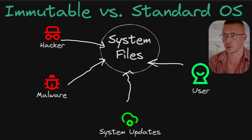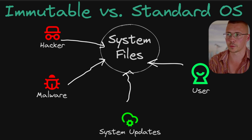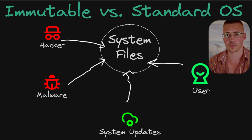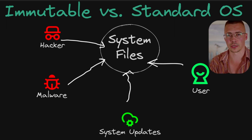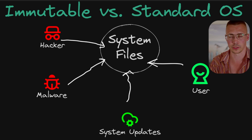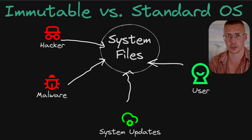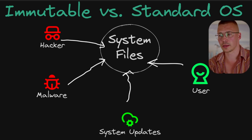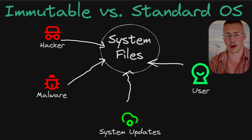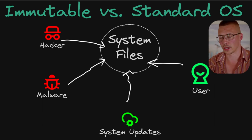It can vary a little bit depending on the operating system you're using, but for example, on Fedora Silverblue, the only way you can get packages installed is through FlatHub. There are some other techniques if you really jump through hoops, but basically the only thing you can do is get your applications through Flatpak, and nobody can modify the system files.